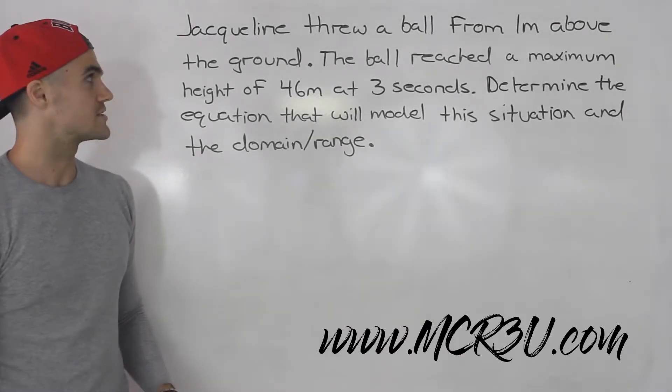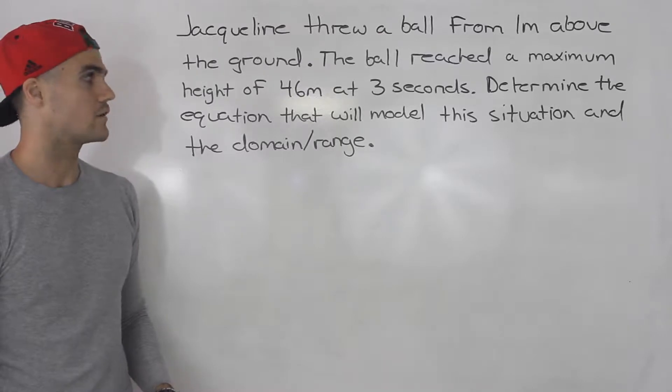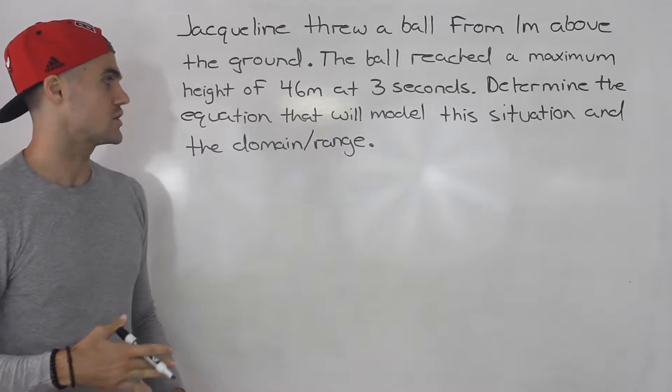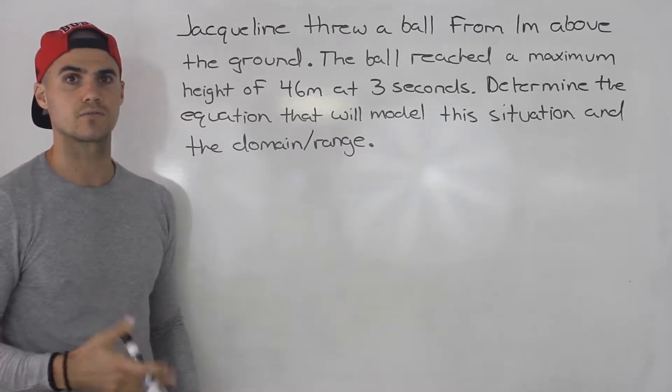Moving on to the next question on the test. Jacqueline threw a ball from 1 meter above the ground. The ball reached a maximum height of 46 meters at 3 seconds. Determine the equation that will model this situation and the domain and range.